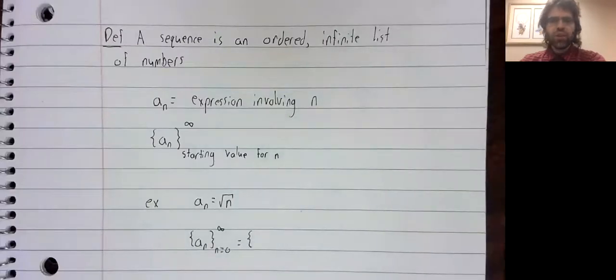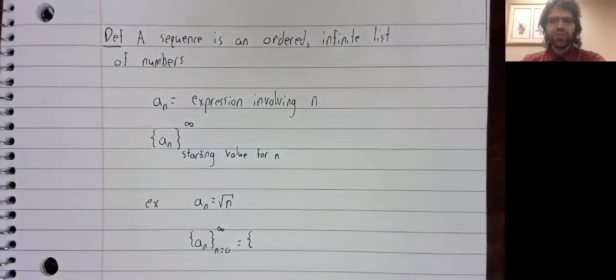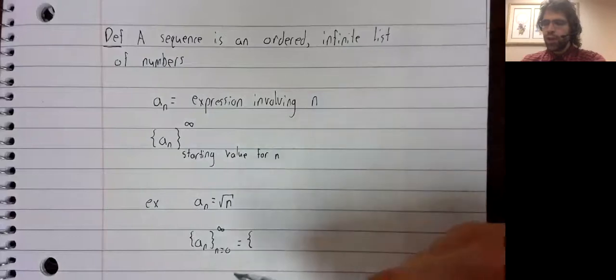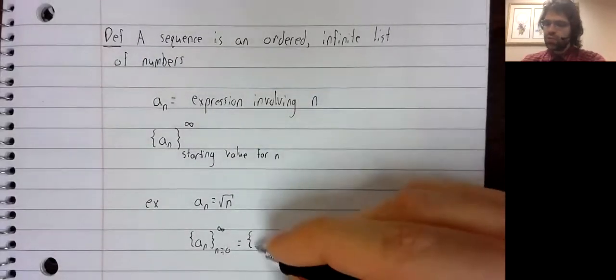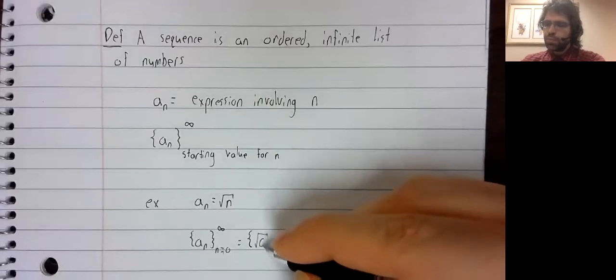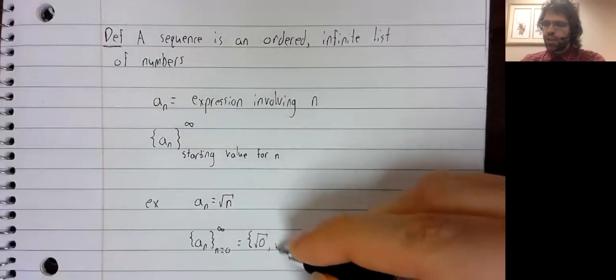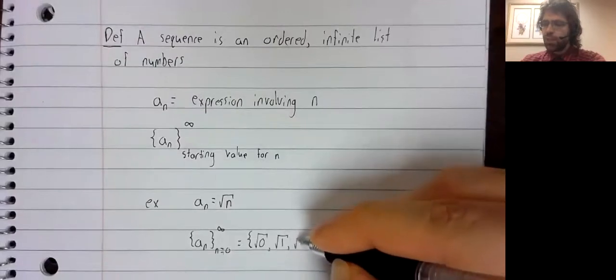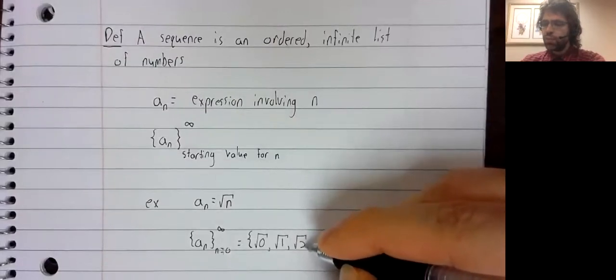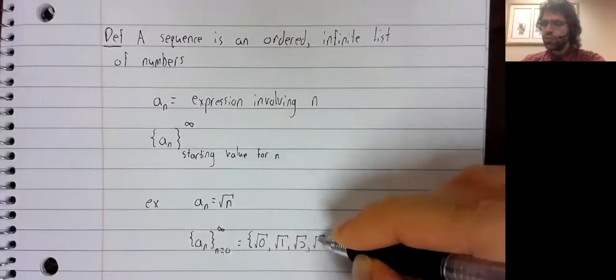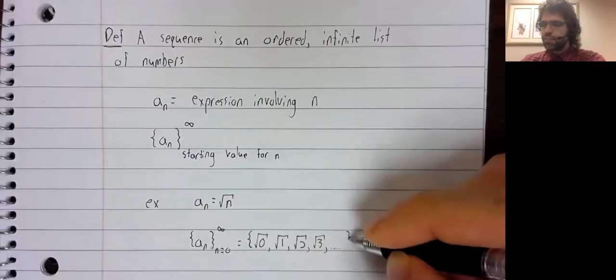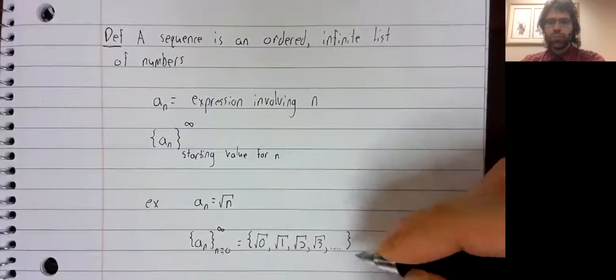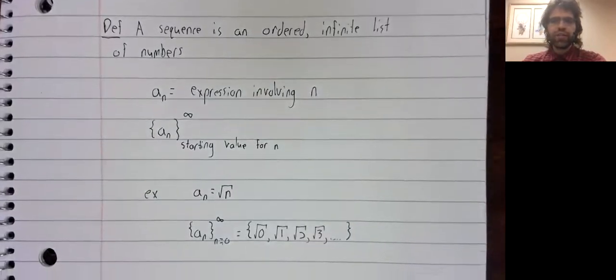This is a sequence, just a list of numbers. We start by letting n equals zero, and then we just count up: zero, one, two, three, and onwards for infinity.